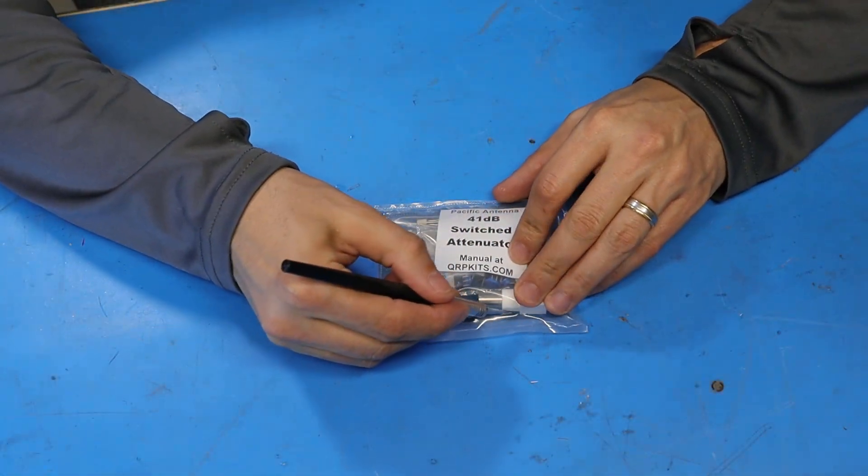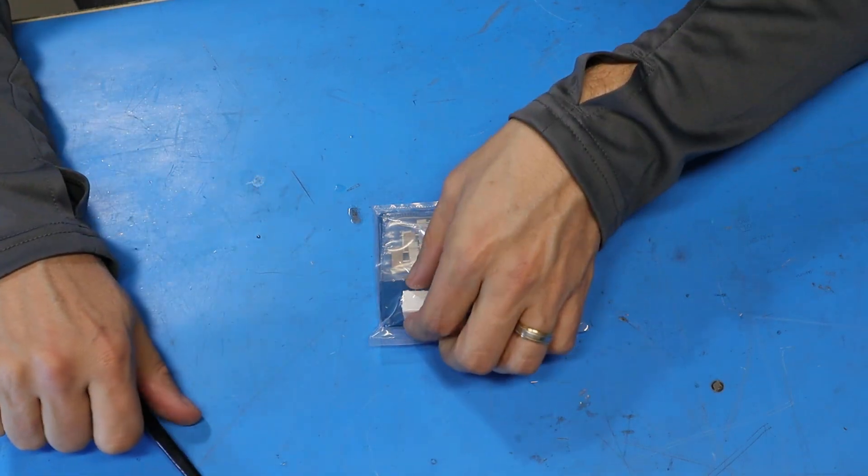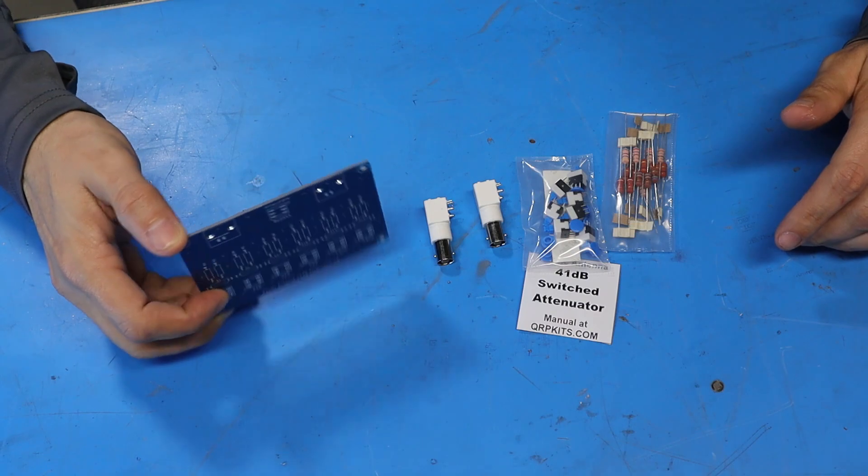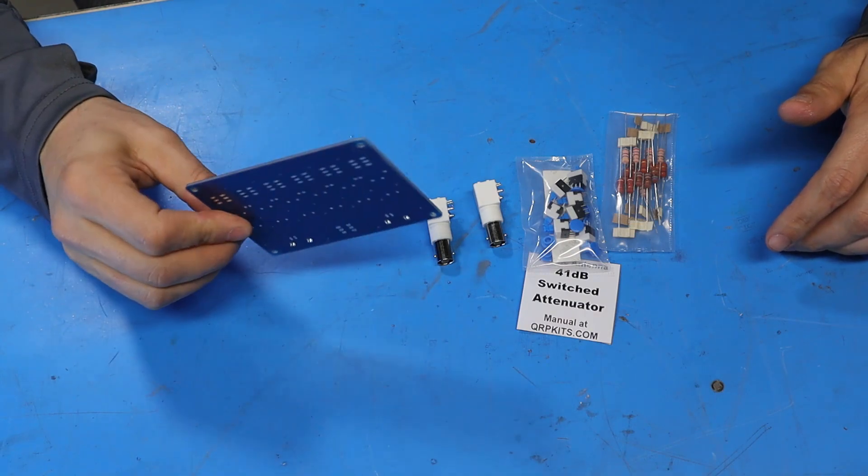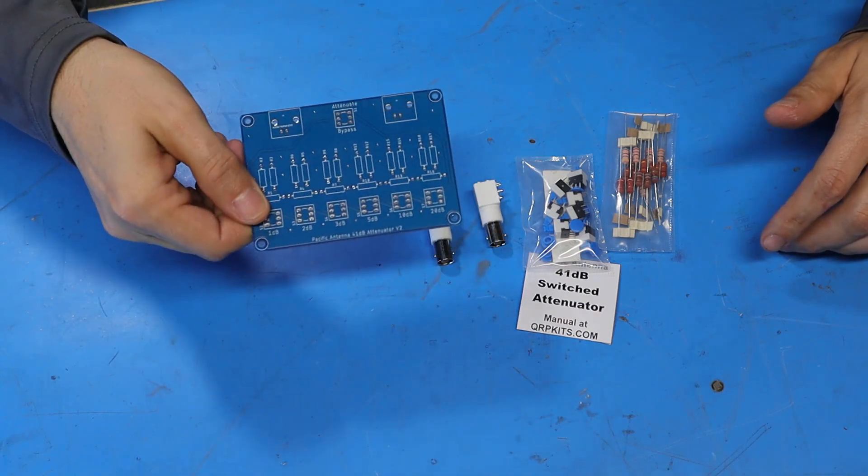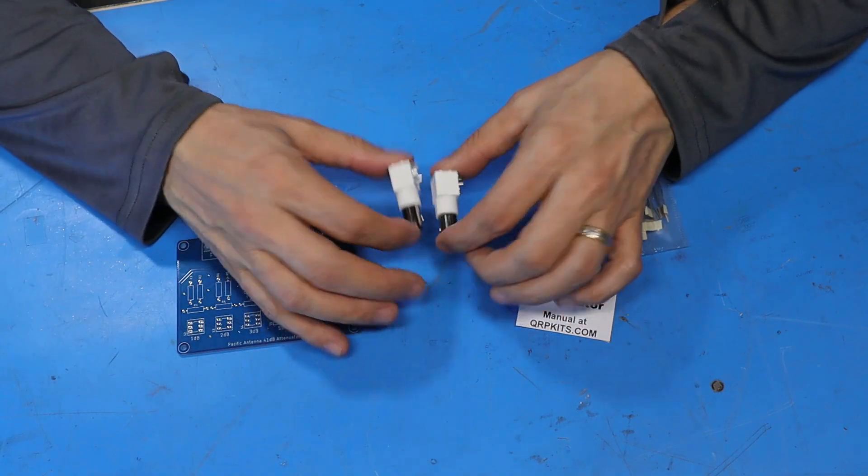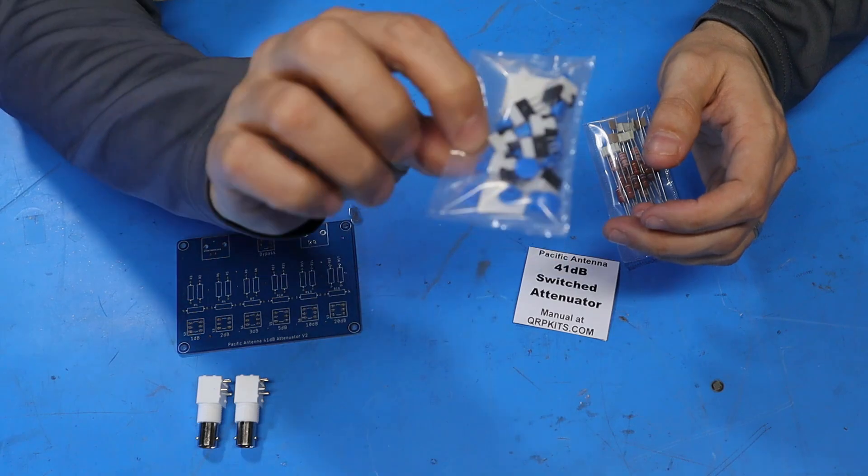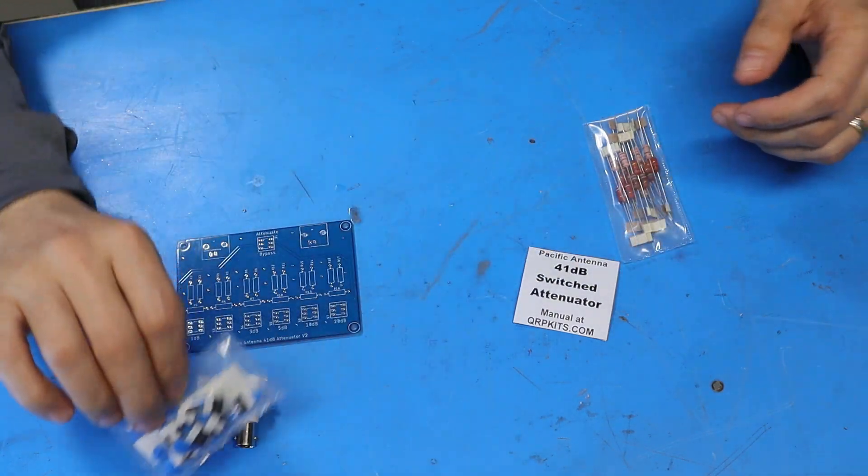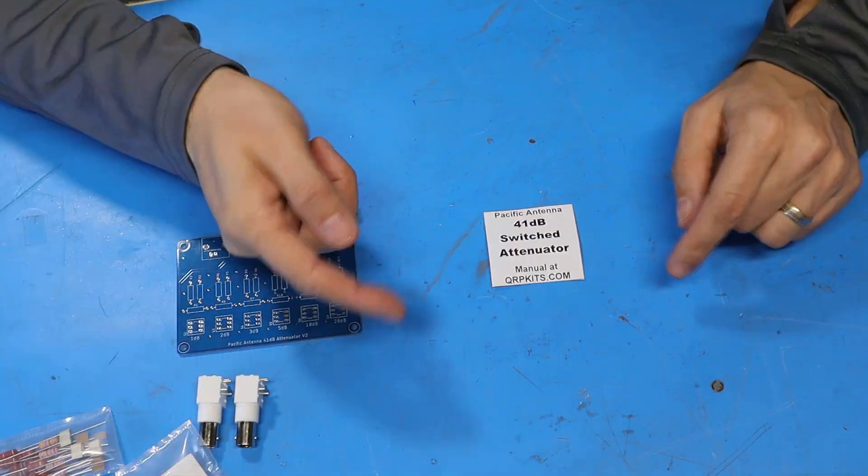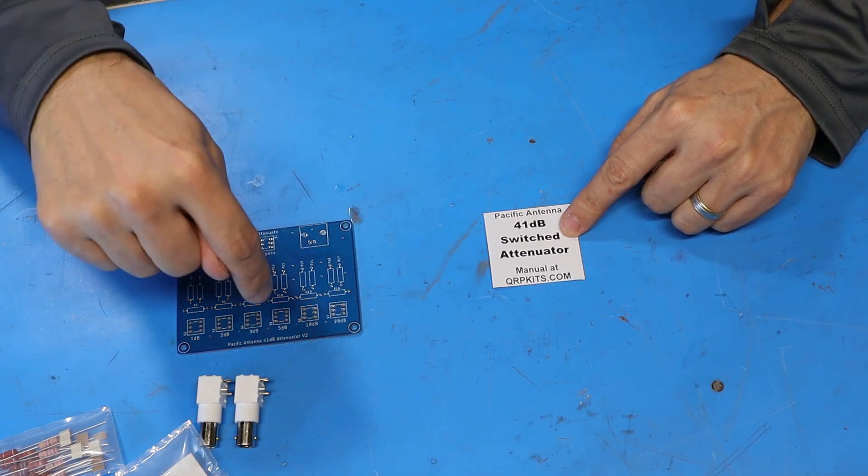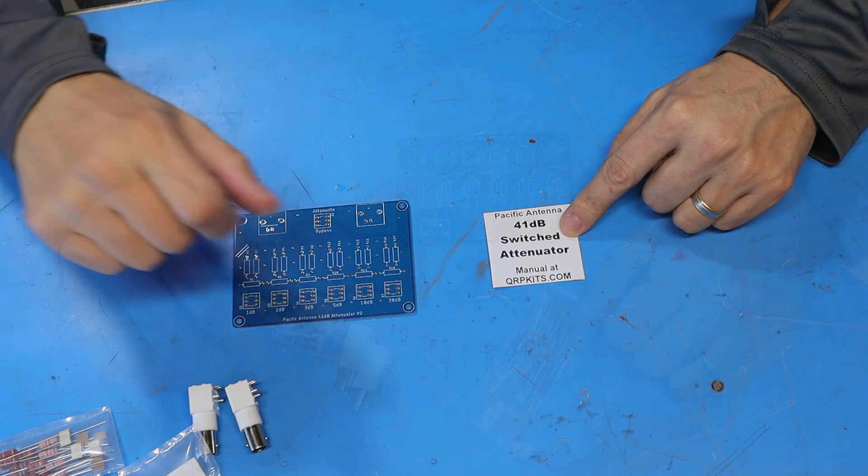First I'll cut this out of the plastic and we'll see what we're dealing with. The kit consists of a printed circuit board with a bluish solder mask, a couple of PCB mounted BNC connectors, a bag full of buttons with button covers, a bag full of resistors, and we need to go to the qrpkits.com website to download the assembly manual.